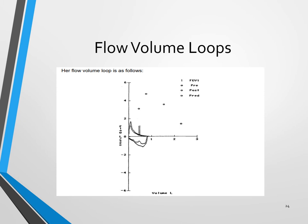Let's take a look at her flow volume loop. What you can really observe on her peak expiratory flows is a scalloped, concave appearance in the peak expiratory flow rates. That would be significant of obstruction. This flow volume loop demonstrates scalloping, which is consistent with obstructive disorders.